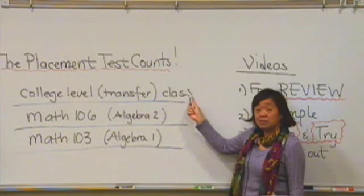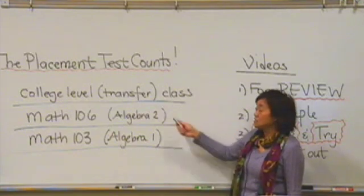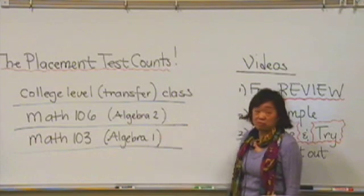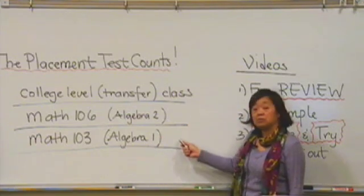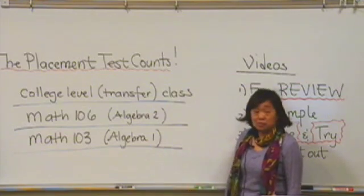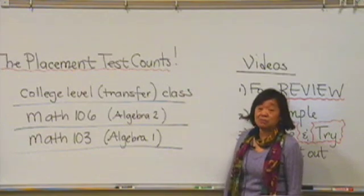However, if your placement test score is not high enough, you'll be recommended to take one of two classes. Either Math 106, which is the equivalent of Algebra 2 from high school, or Math 103, which is the equivalent of Algebra 1 in high school. For students that have already taken these courses successfully in high school and passed them,